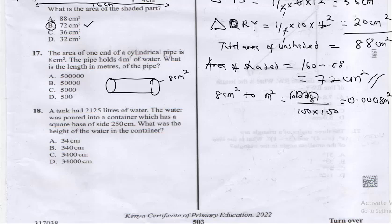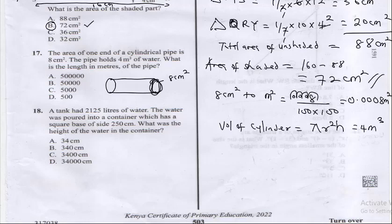The question says the area of one end of a cylindrical pipe is 8 cm squared, and the pipe holds 4 meter cubed of water — that's the volume. Volume of a cylinder is pi r squared times h, which equals 4 meter cubed. The area of a circle is pi r squared, so pi r squared equals 0.0008 meter squared.